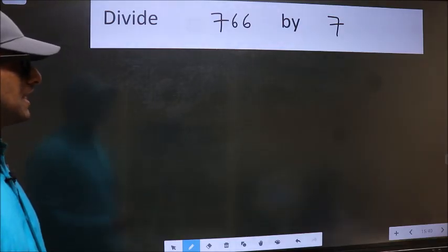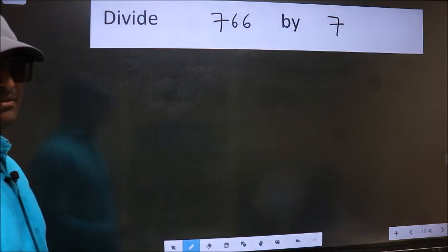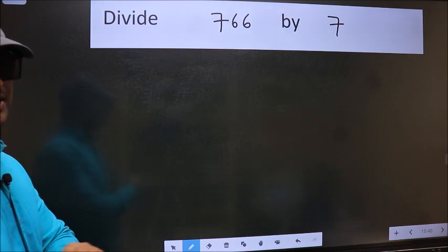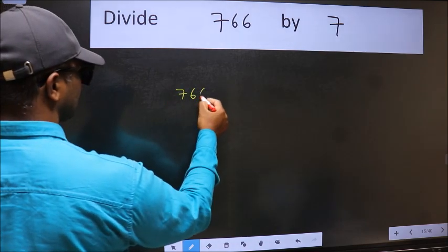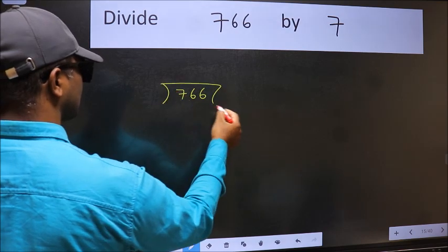To divide 766 by 7, we frame it this way: 766 here and 7 here.